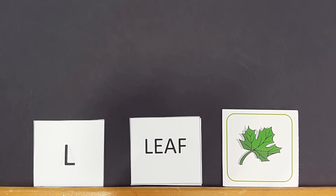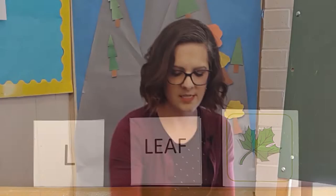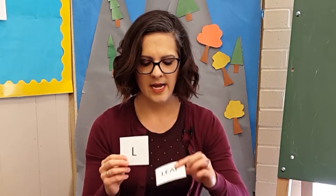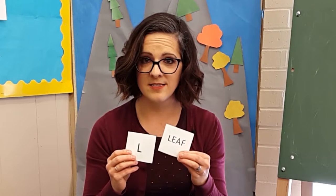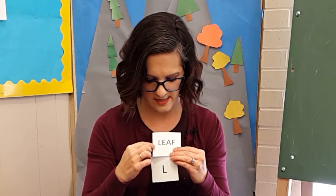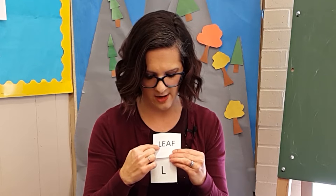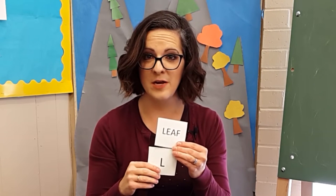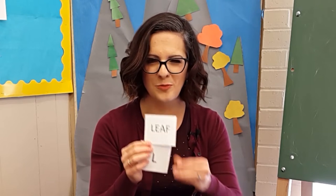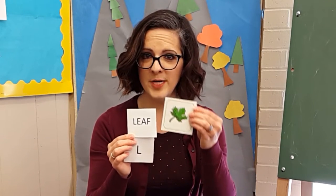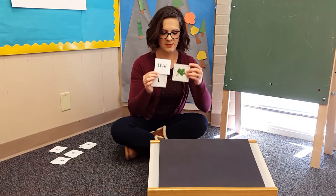I start by explaining to my students that a letter is all alone by itself, but a word has many letter friends. So this is the L, and then you'll see inside this word it has an L and other letters — E, A, F — and that is a word. And this word means 'leaf', so here's our picture of the word.